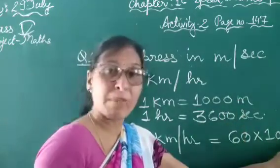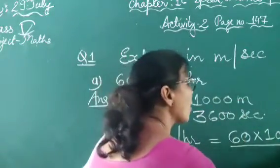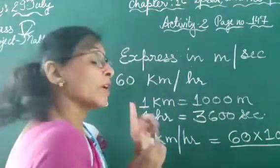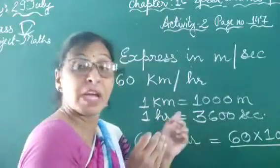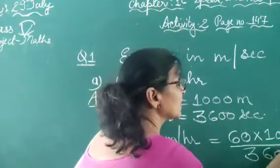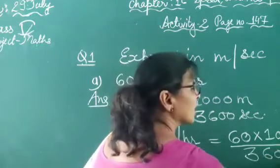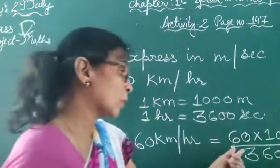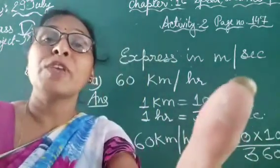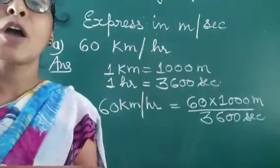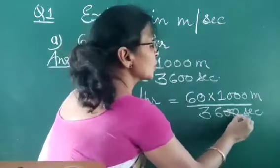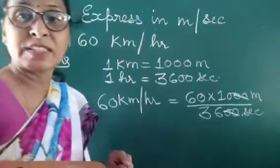So here we multiplied by 1000. Now upon hour is there. So in 1 hour how many seconds are there? 3600 seconds are there in 1 hour. So we write it here 3600. Now we cancel it. How we can cancel?